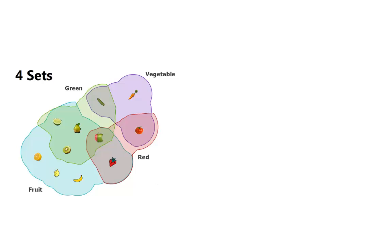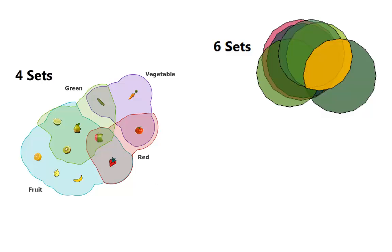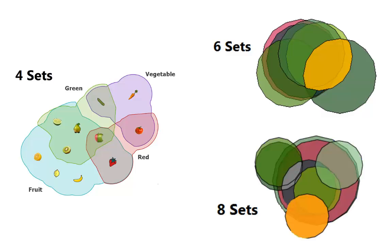Euler diagrams offer a very natural way to depict overlapping sets as overlapping regions in the plane. However, the complexity of the diagram increases rapidly with an increasing number of sets.